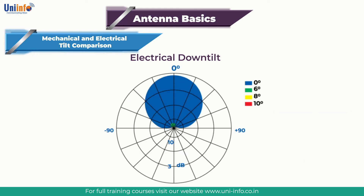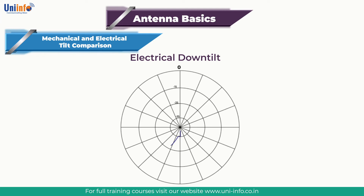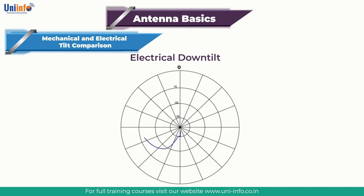Electrical down tilt uses a phase taper in the antenna array to angle the pattern downwards, allowing the antenna to be mounted vertically. It is the only practical way to achieve pattern down-tilting with omnidirectional antennas. Electrical down tilt affects both front and back lobes equally — if the front lobe is down-tilted, the back lobe is also down-tilted by the same amount. This adjusted down tilt angle is constant over the whole azimuth range.